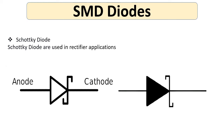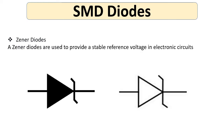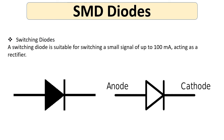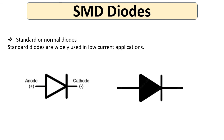The Schottky diode is used in rectifier applications. The Zener diode is used to provide a stable reference voltage in electronic circuits. The rectifier diode is used for AC line rectification, converting alternating current to DC current. The switching diode is suitable for switching small signals of up to 100 mA, acting as a rectifier. Standard diodes are widely used in low current applications.